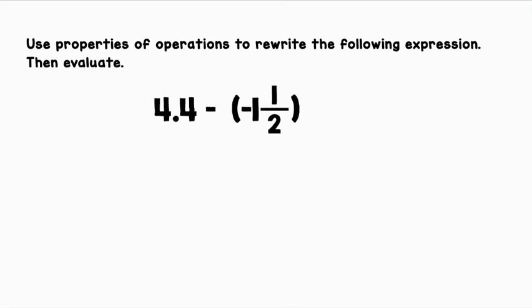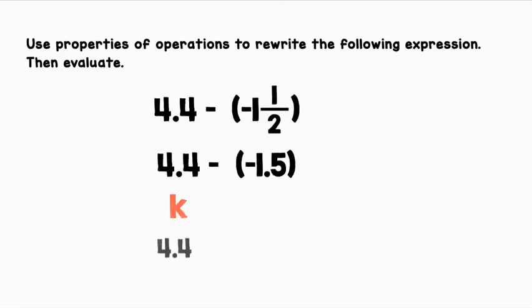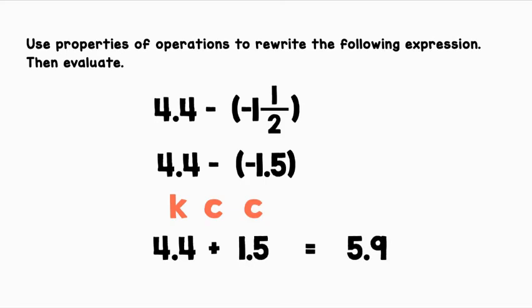Use properties of operations to rewrite the following expression, then evaluate: 4.4 minus negative 1 and one half. First, let's convert our rational numbers to the same form. I'm going to convert the fraction to the decimal: 4.4 minus negative 1.5. Next, let's use the additive inverse. Let's keep 4.4, change subtraction to addition, and change negative 1.5 to positive 1.5. 4.4 plus 1.5 equals 5.9.